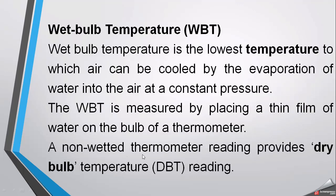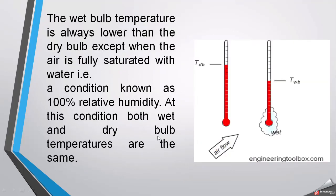A non-wetted thermometer reading provides the dry bulb temperature, abbreviated DBT. This thermometer is not surrounded by any water layer. If both thermometers are placed in the same environment — one surrounded by a thin layer of water and the other without — the temperature readings will be different, because the wet bulb temperature is always lower than the dry bulb temperature.